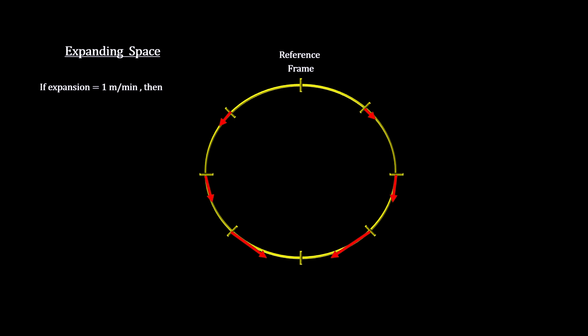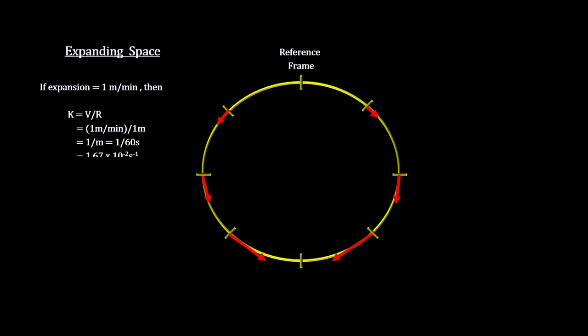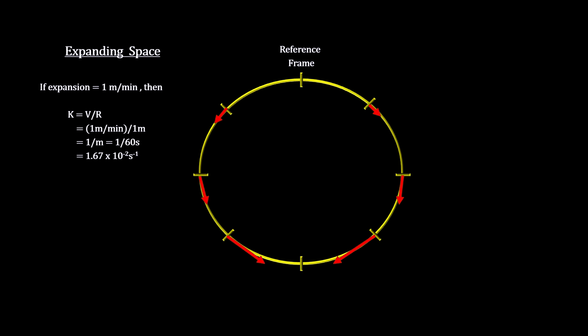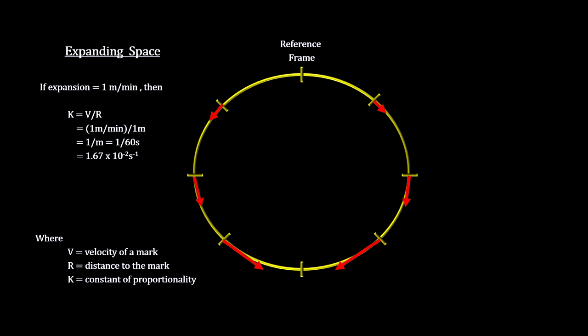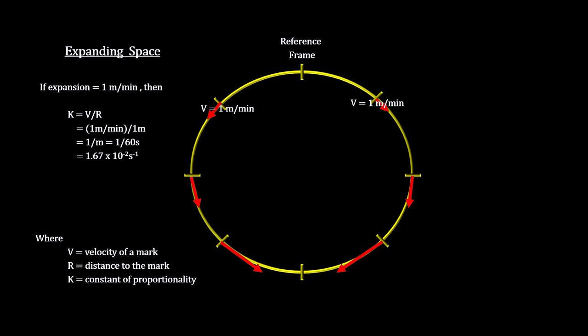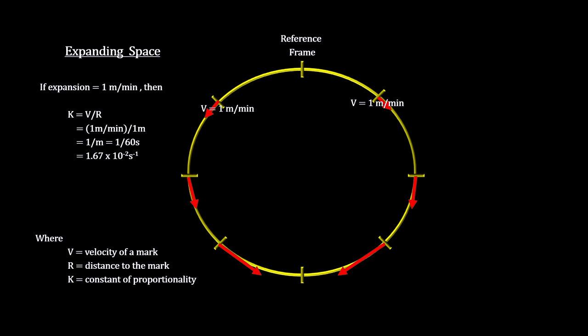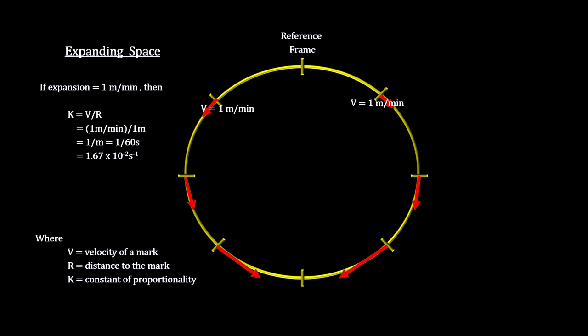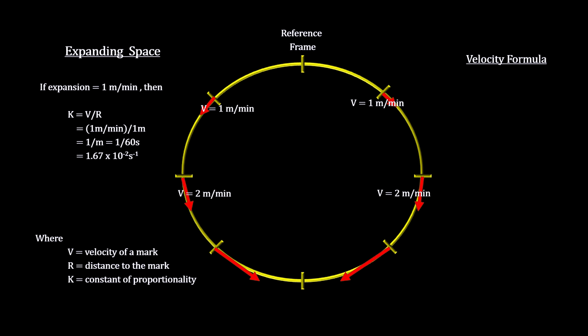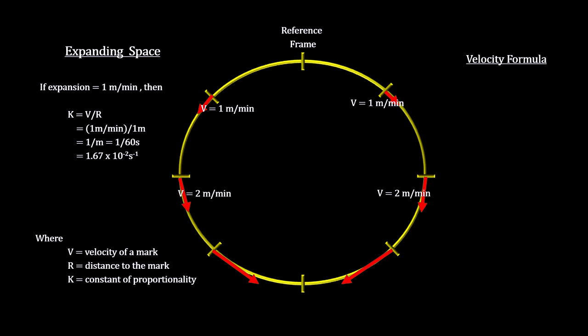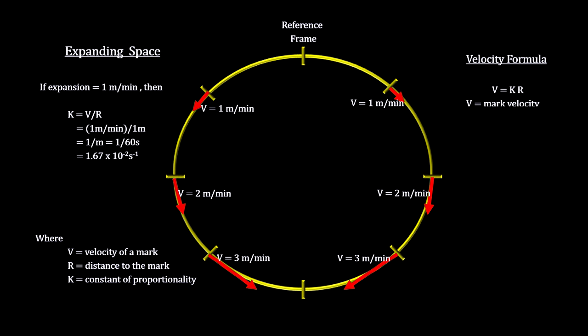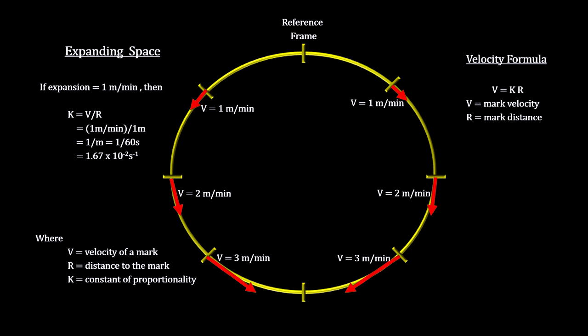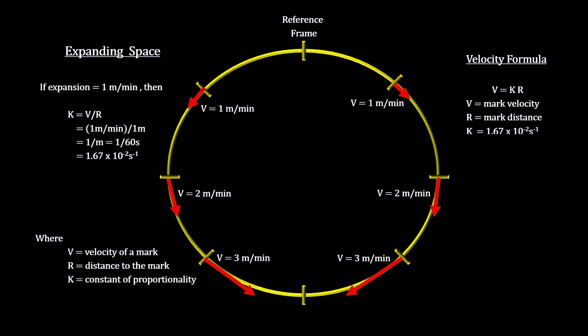Let's say each meter on the line expands to two meters over the course of a minute. We see that the distance between adjacent marks goes up one meter and their apparent velocity, as seen by each other, is one meter per minute. But more distant marks have increased their distance and velocity by more than that. The further away any two marks are, the more their distance and velocity have increased.